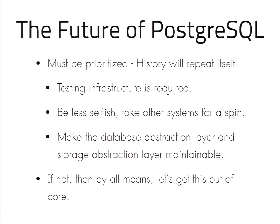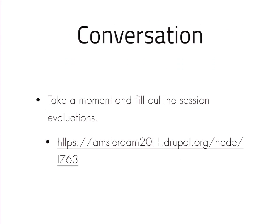In my opinion, we're on the right track. We have the initiative set up to improve our testing infrastructure. If we are prioritizing PostgreSQL, that meets my criteria and I think we should keep it in core. But if we don't prioritize it, then by all means let's remove it. So with that, I'd like to open the conversation up to questions about PostgreSQL currently or the future of database abstraction, and what we can do in our storage layer.